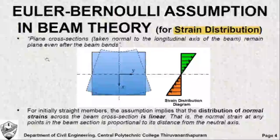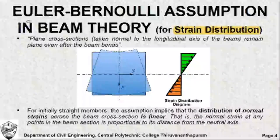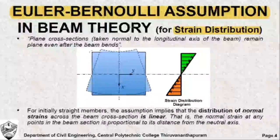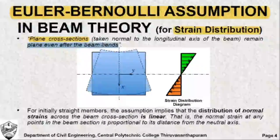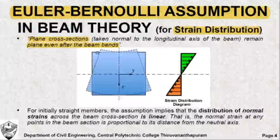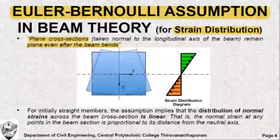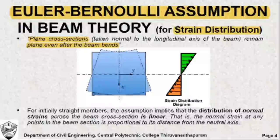Now we are most interested to know how the reinforced concrete beam undergoes deformation across any particular section, for which we invoke what is known as the Euler-Bernoulli assumption. According to the Euler-Bernoulli assumption, plane cross sections of any beam remain plain even after the beam bends. A part of a beam is shown here in solid line, and when it is subjected to loads it undergoes bending. The bent profile is also shown using dashed line. The sections were initially plain and they remain plain even after bending.